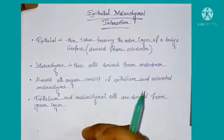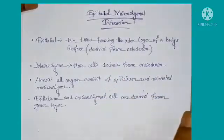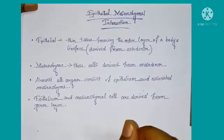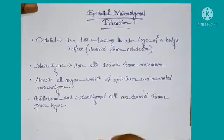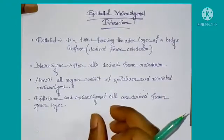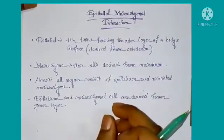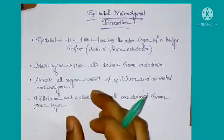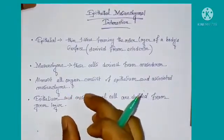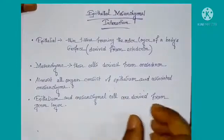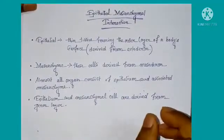In the case of instructive interaction, the responding cell needs instruction or a signal sent by the inducer cell to form a particular cell type. If the inducer cell is absent or the inductive signal is not present, the responding cell functions in another way. If another type of inducer cell is present, the responding cell is influenced by that inducer cell and forms another type of cell according to the signal sent by that inducer.